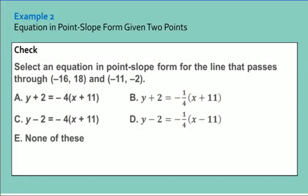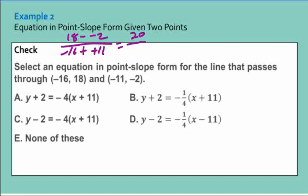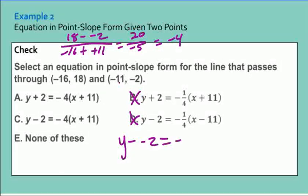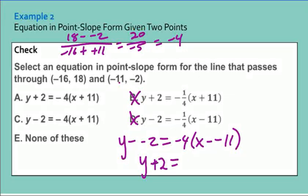For the next example, negative 1 minus negative 7 over 2 minus 5 gives 6 over negative 3, a slope of negative 2. Using this point, Y minus negative 1 equals negative 2 times X minus 2, which gives Y plus 1 equals negative 2 times X minus 2. Or choosing the other point gives Y plus 7 equals negative 2 times X minus 5. Finding slope first gives negative 4, so the answer is letter A: Y plus 2 equals negative 4 times X plus 11.